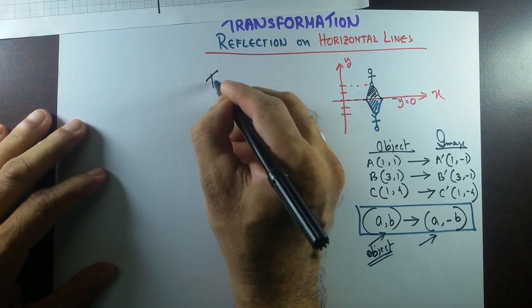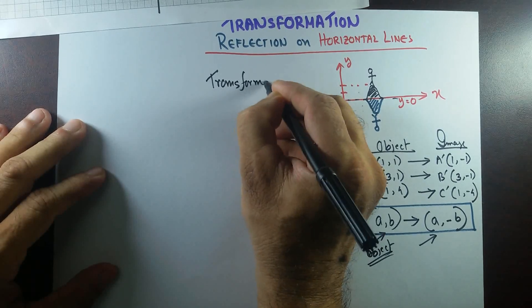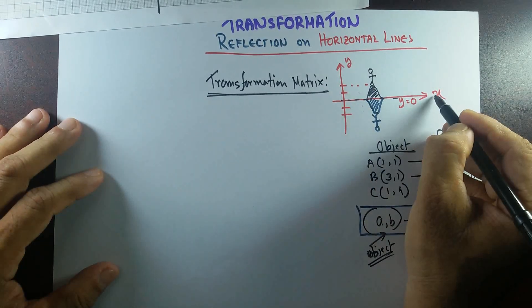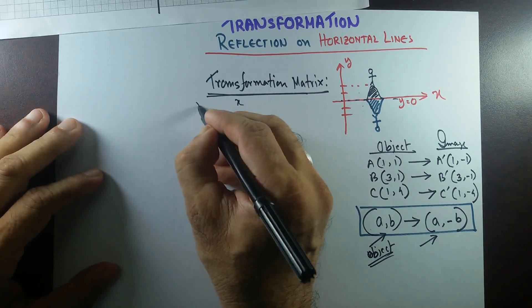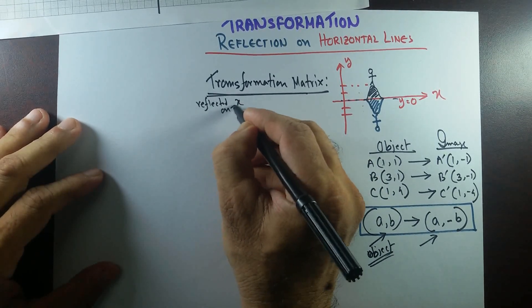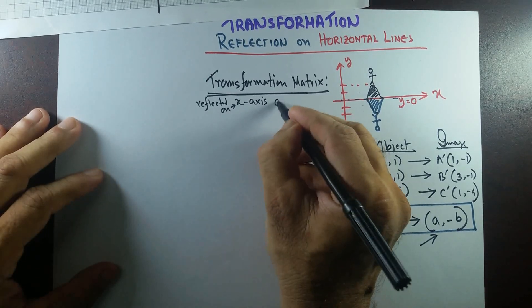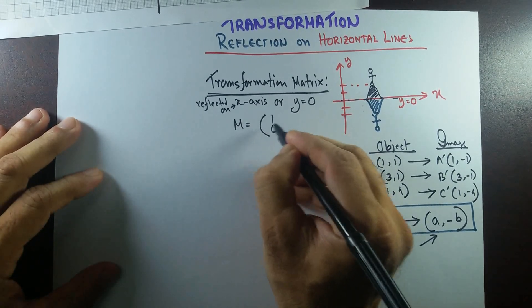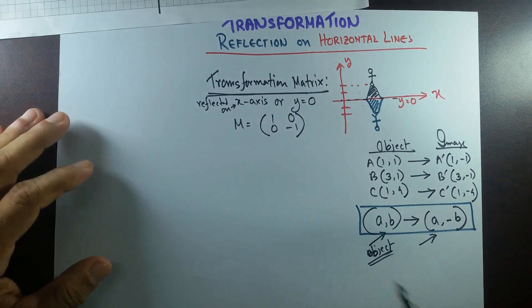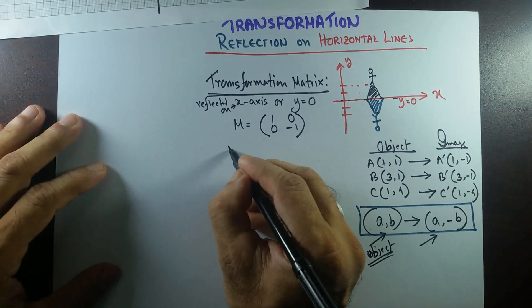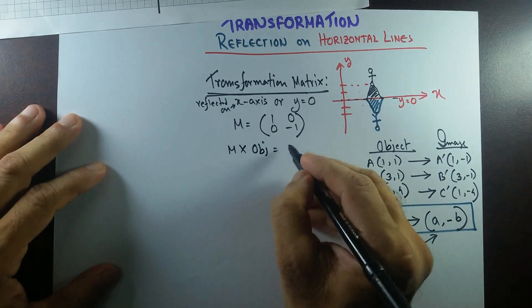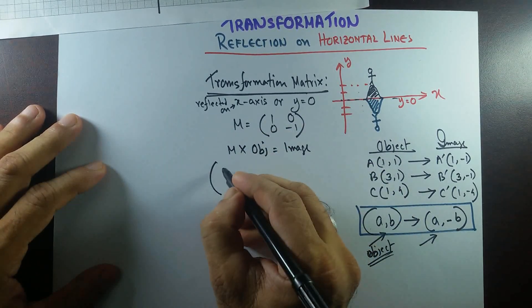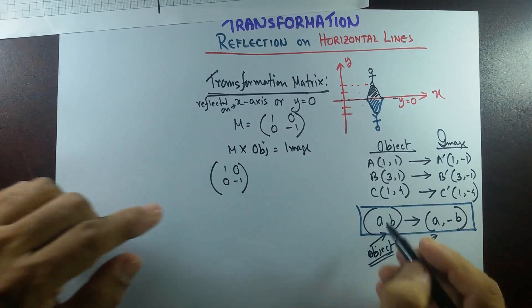Now let's talk about the transformation matrix. If any object is reflected on the x-axis, where the equation is y equal to 0, then the transformation matrix would be [1, 0 / 0, -1]. The formula is: transformation matrix times object equals the image.